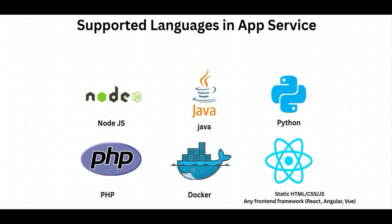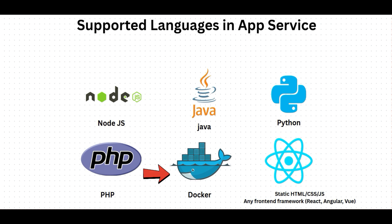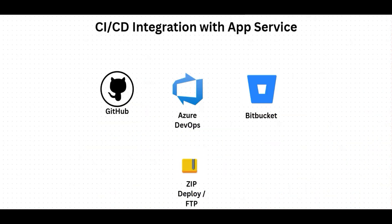Now let's understand what languages and frameworks Azure App Service supports: Node.js, Java, Python, PHP, Docker, and static HTML/CSS/JavaScript, or any front-end framework like React, Angular, or Vue.